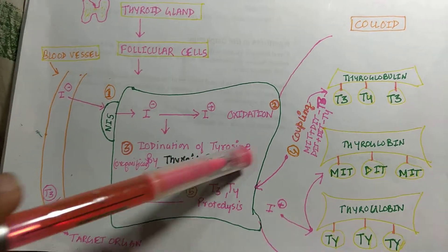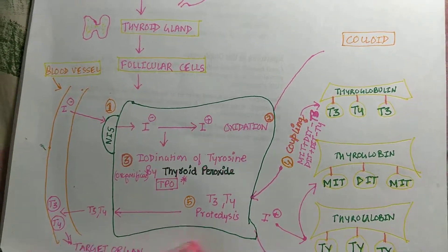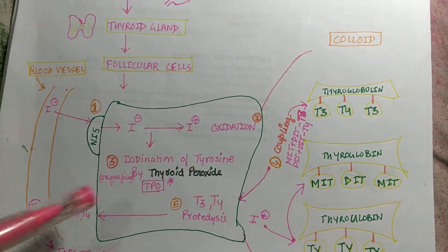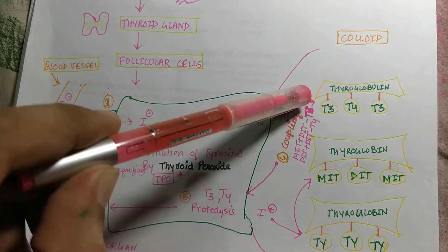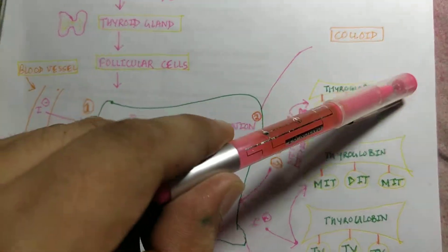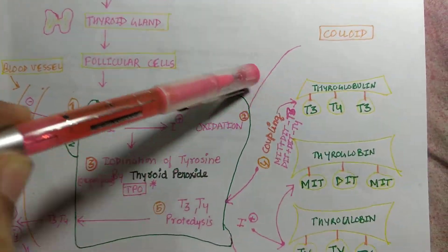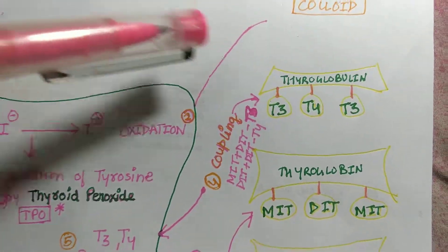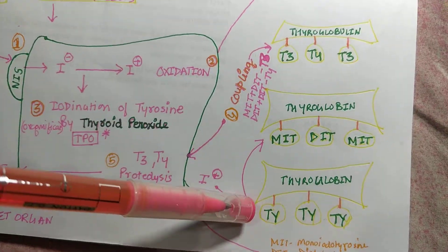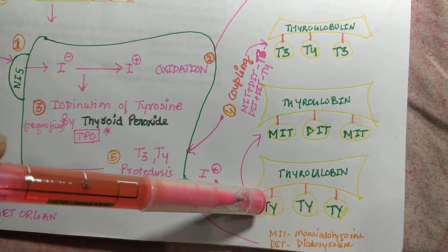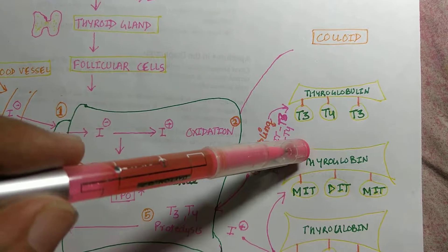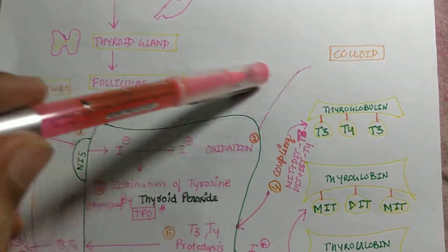This is a follicular cell, this is a blood vessel, and this is the colloid of the follicular cells. In the colloid there is a protein known as thyroglobulin. This is a protein which has tyrosine residues, and we will see the role of this protein shortly.